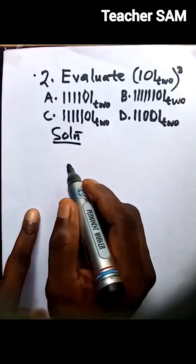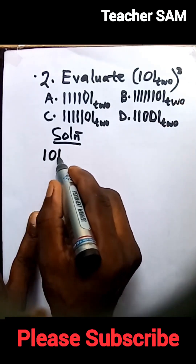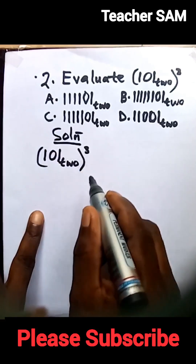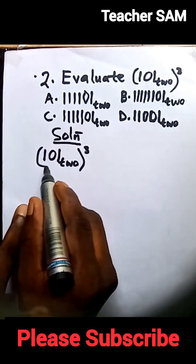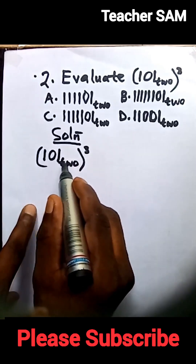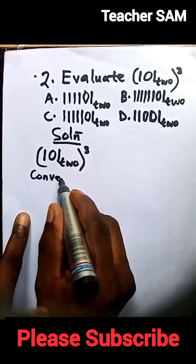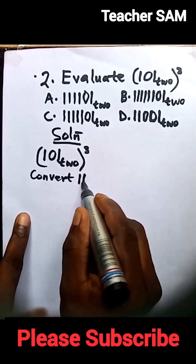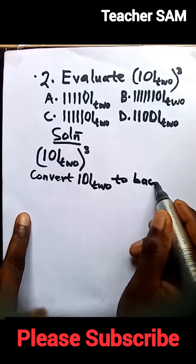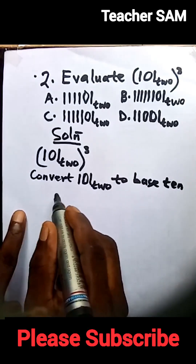This simply means 101 base 2 raised to power 3 raised to power 3. First, let's convert this number from base 2 to base 10. So let's convert 101 base 2 to base 10.